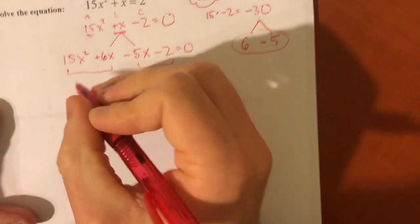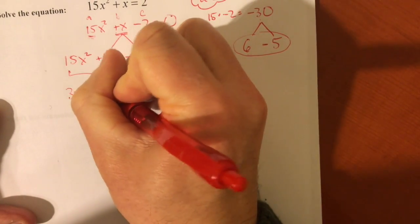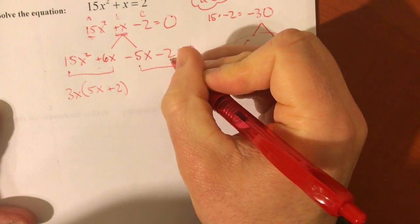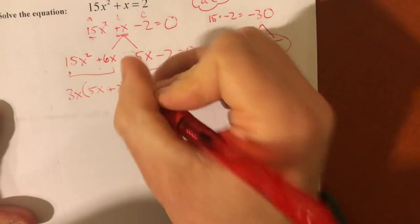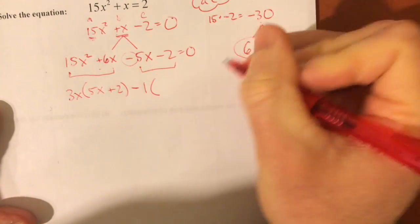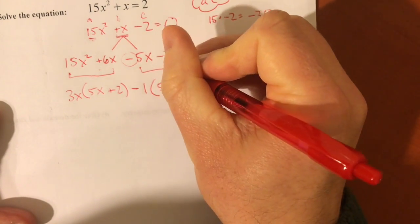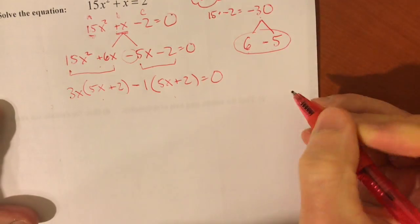So factoring a GCF out of this, you can take out 3x. Then you'll have 5x plus 2. Out of this, the only thing I can take out is 1 or negative 1. And in this case, I want to take out negative 1. And remember, that will switch the sign of this when you factor out a negative. So you'll have negative 1 times 5x plus 2, which is what you wanted.